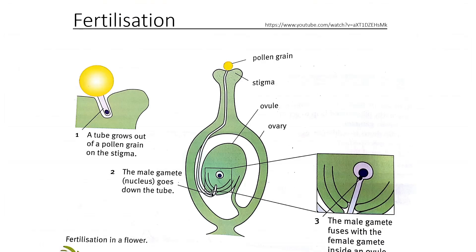Fertilization in plants works similarly to humans. A pollen tube grows out of a pollen grain on the stigma — like the sperm duct. The male gamete travels down the tube. Since there are many pollen grains, only one can pass through, just like sperm cells where only one fertilizes the egg. The male gamete fuses with the female gamete inside an ovule, forming a zygote — the same as in humans when an embryo begins to form.